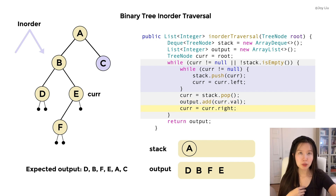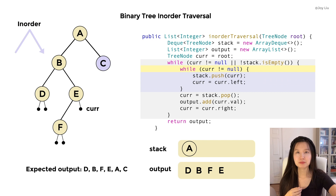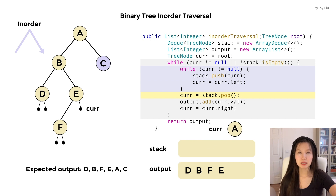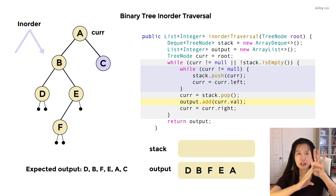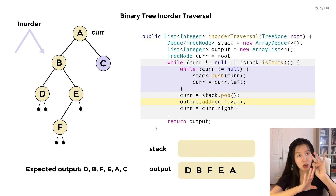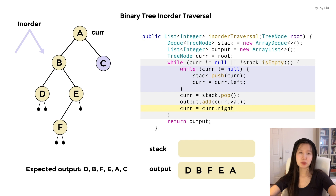We always deal with the parent before dealing with its right child. The right child of E is null, so we go back and check the condition. We pop A from the stack — A is the first element we saved, but it gets popped very late because of the first in, last out principle. We add the value of A to the output. Let's double-check: is everything in the left subtree of A — D, B, F, E — before A? Yes. Is everything on the right of A not yet in the output? Yes — C has not been visited yet.